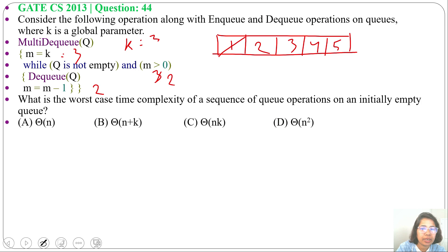Q is not empty, M is 2, 2 greater than 0, dequeue will delete 2, then M will be M minus 1, it will be 1. Q is not empty, 1 is greater than 0, then again dequeue. M will be M minus 1, now it's 0. Next time M equals 0, so we will exit from the loop.